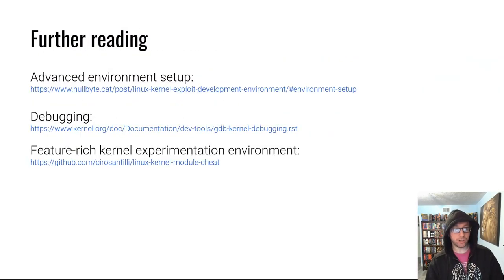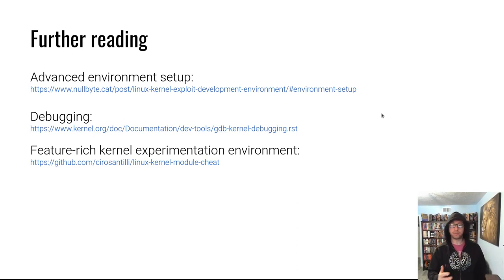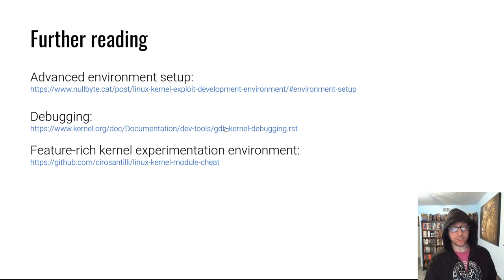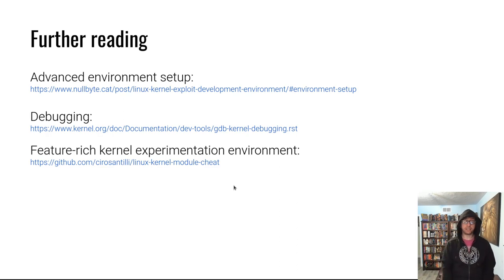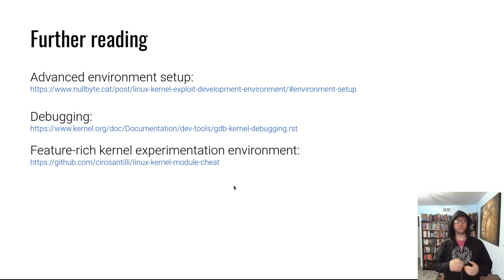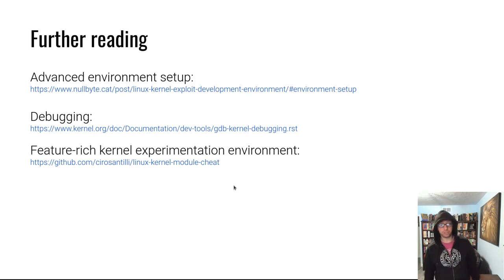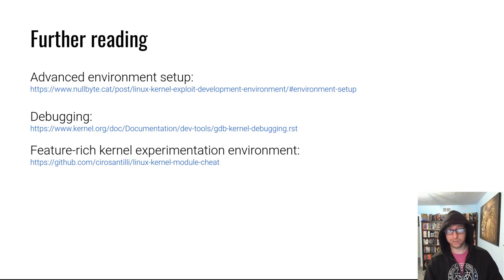If you're interested in all of this, here's some further reading: a description of how to set up a kernel exploit environment, the pwn-kernel source code, an entire document on kernel debugging with QEMU and GDB, and a much more feature-rich analog to pwn-kernel where you can explore different architectures like Linux on ARM, different kernel versions, and more. Next video we'll talk about kernel modules.